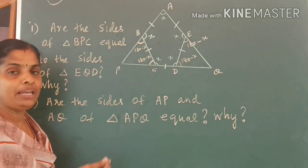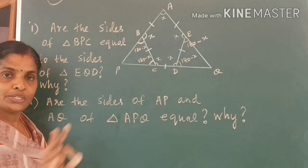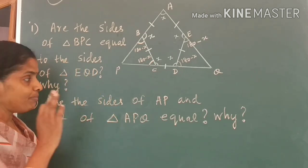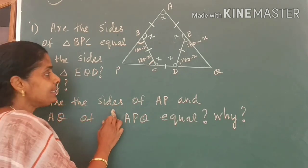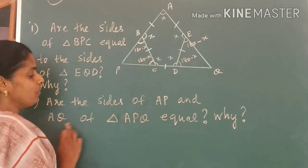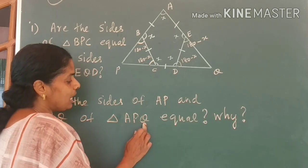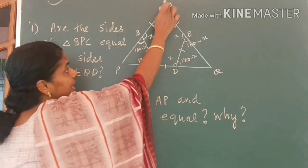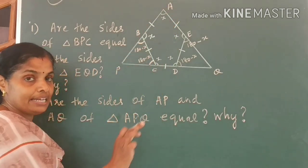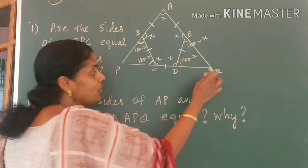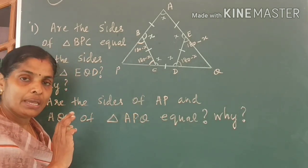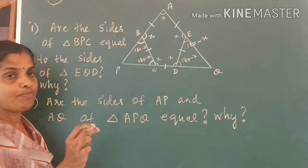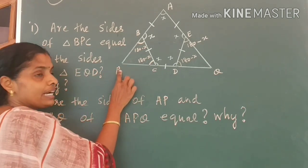If two triangles are equal, all their sides are also equal. That is the answer for the first question. Clear? Come to the second question. Are the sides AP and AQ of triangle APQ equal? I will explain the answer in a single step.